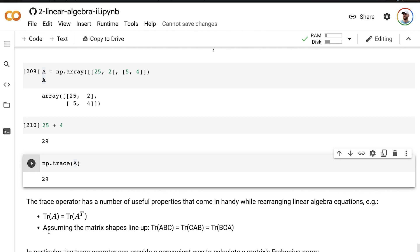In addition, assuming that the matrix shapes line up, then the trace of various combinations of matrix multiplications, if we have three matrices A, B, and C, we could perform matrix multiplication of A, B, and C, or C, A, and B, or B, C, and A. When we take the trace, it's the same. We get the same answer out of it.